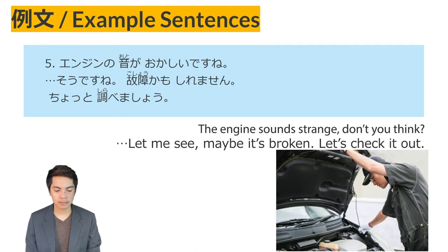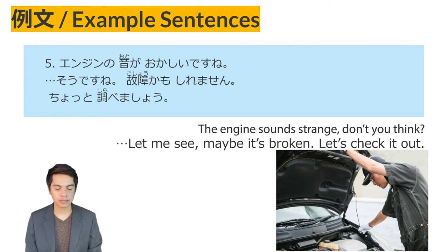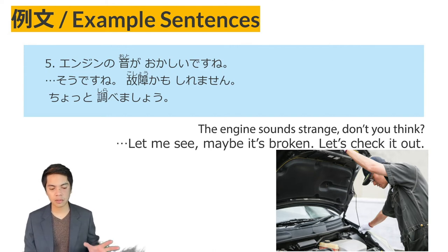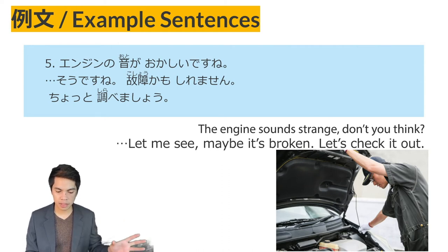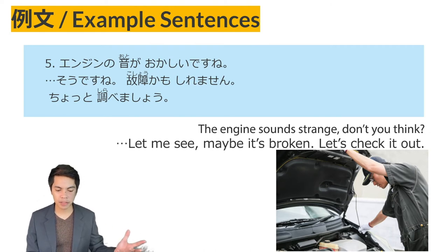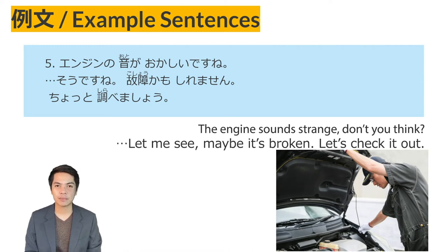Example sentence five: Enjin no oto ga okashii desu ne — 'The sound of the engine is strange.' Reply: Sou desu ne, kosho kamoshiremasen. Chotto shirabemashou — 'Maybe it's broken down. Let's check it out.' Here kosho means a breakdown or a machine stopping working, and kamoshiremasen expresses the guess.